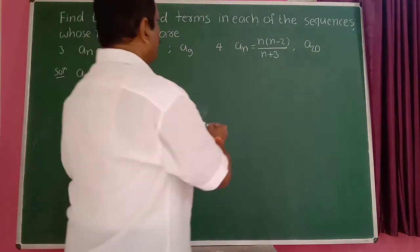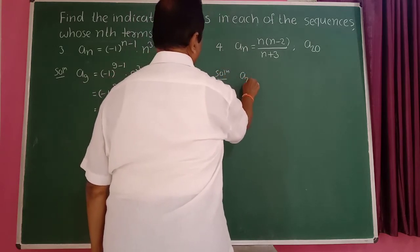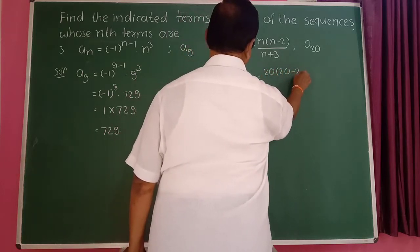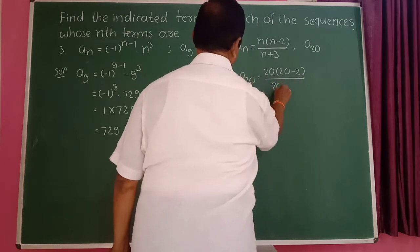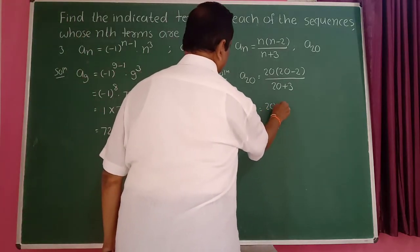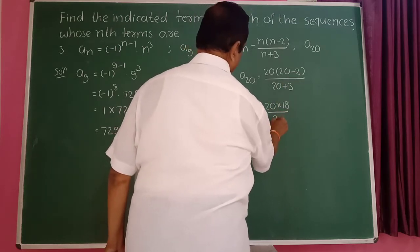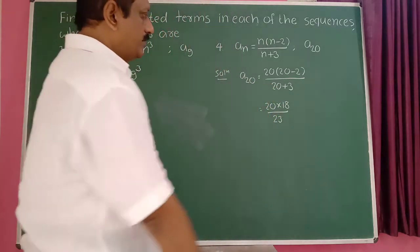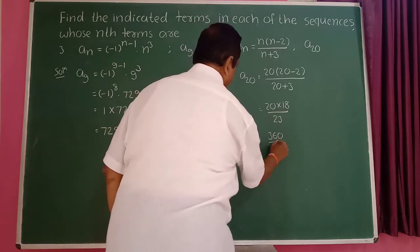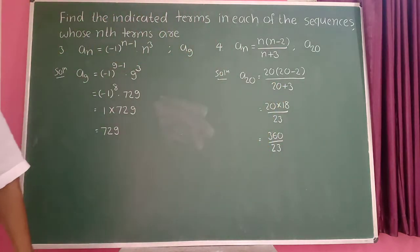This is the fourth example. Find the 20th term. Put n equal to 20. So a_20 is equal to 20 into (20 minus 2) divided by (20 plus 3). 20 plus 3 becomes 23. Then 20 into 18 is 360, divided by 23. So 360 divided by 23 is the 20th term.